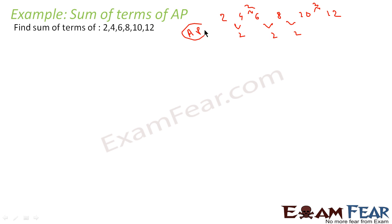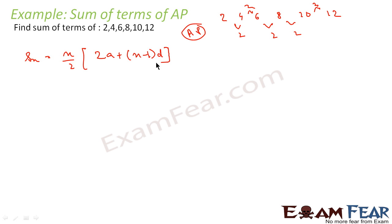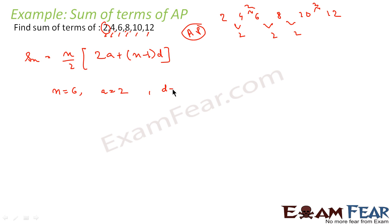Now we can use the formula: SN = N/2 × (2A + (N−1) × D). To use this formula we need to know N, A, and D. Counting the elements 1, 2, 3, 4, 5, 6 — there are 6 elements, so N = 6. The first element is 2, so A = 2. The common difference is 2, so D = 2.